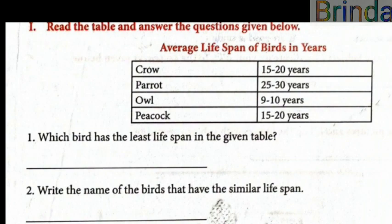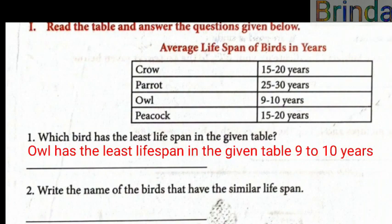Based on this tabular column, we have to answer the questions. Which bird has the least lifespan in the given table? Looking at the values — 15 to 20, 25 to 30, 9 to 10, 15 to 20 — the least is 9 to 10. That is the owl. Owl has the least lifespan in the given table.